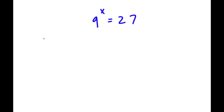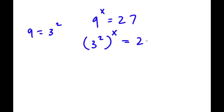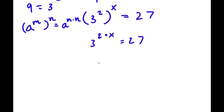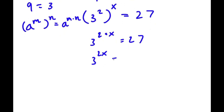9 is the same thing as 3 squared. So 9 to the power of x equals 3 squared to the power of x, which is equal to 27. Using the rule that a to the power of m to the power of n equals a to the power of m times n, we get 3 to the power of 2 times x, which is 3 to the power of 2x, is equal to 27.